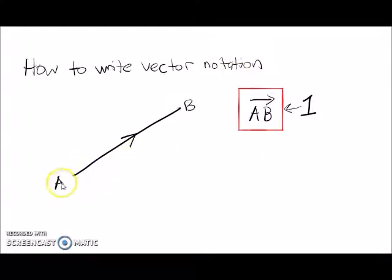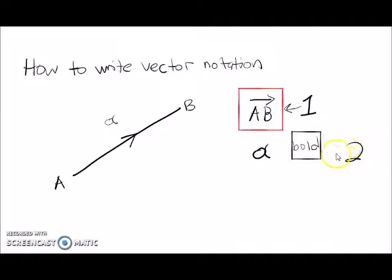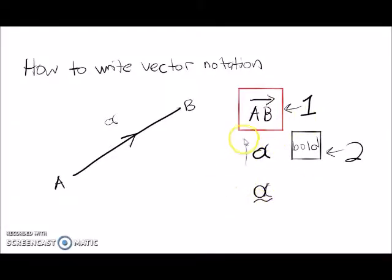The second way: vector AB can also be represented by a letter, let's say alpha. There are two ways to write alpha — one is we can make it bold. The third way is we can write alpha and put a line over it. So this one becomes another vector notation.